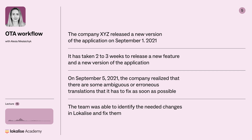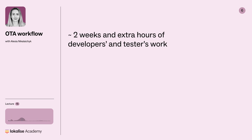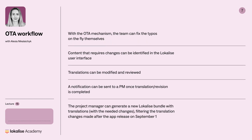If the team were to go to developers and testers and ask them to proceed again with the steps from performing translation tests to performing a new bundle and releasing it for approval to Apple or Google Play Market, that could have taken up to two weeks and definitely involved extra hours of developer and tester work. With the OTA mechanism, the team can fix the typos on the fly themselves — content requiring changes can be identified in Localized within the user interface, no coding required, or new files with the changes can be pushed by developers to Localized.